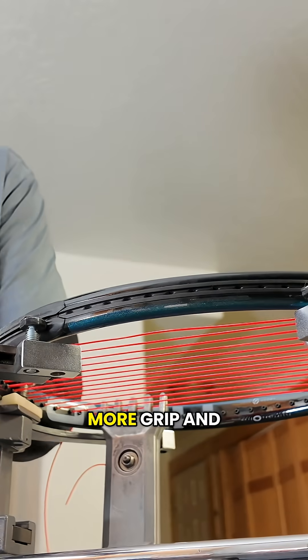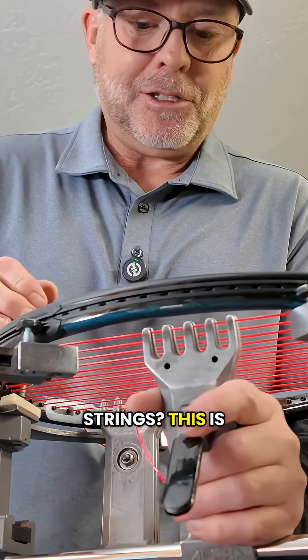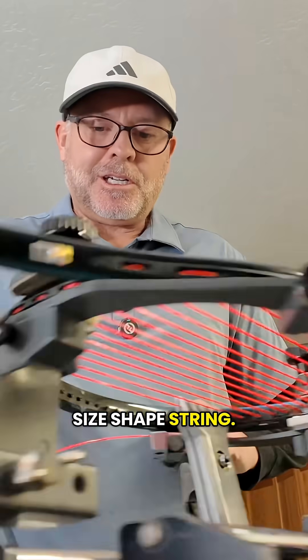So what about shaped strings offer more grip and spin potential versus non-shaped strings? This is a big one. This is a shaped string right here. It's a five-sided shaped string.